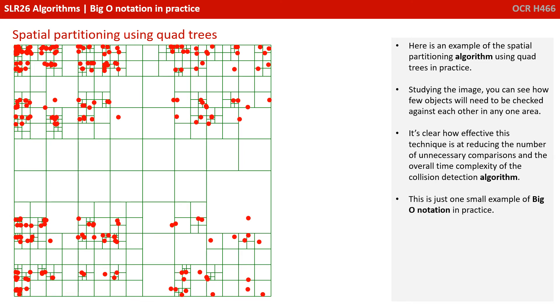Here's an example of the spatial partitioning algorithm using quadtrees in practice. Studying the image, you can see how few objects will need to be checked against each other in any one particular area. It's clear how effective this technique is at reducing the number of unnecessary comparisons and the overall time complexity of the collision detection algorithm.